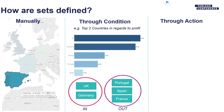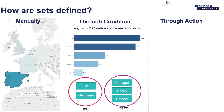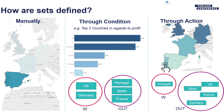Since last year we also added the ability to do it through an action. This is different from manually because it means the end user — the person consuming the dashboard — can just select a mark, and that mark will be in and everything else will be out. We're mostly going to focus on the first two today, but you'll see at the end how things are also applicable to the third way.